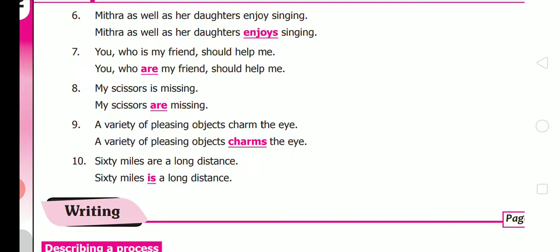Seventh: 'You who is my friend should help me' — 'you' takes plural verb, so 'you who are my friend.' Eighth: 'My scissors is missing' — scissors has two ends, so 'my scissors are missing.' Ninth: 'A variety of pleasing objects charm the eye' — 'a variety' is singular, so 'charms the eye.' Tenth: 'Sixty miles are a long distance' should be 'sixty miles is a long distance.' Hope you have understood the book back exercises. Thank you.